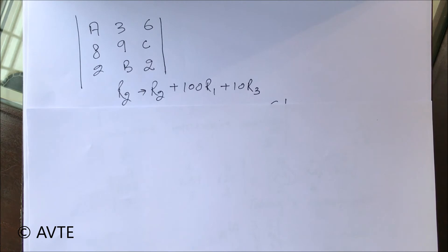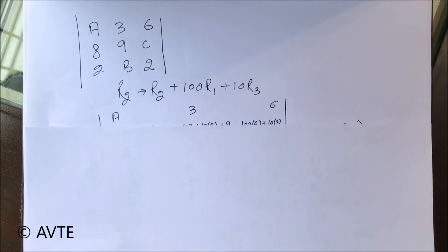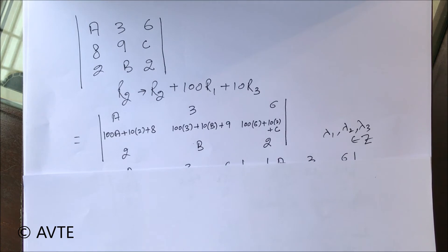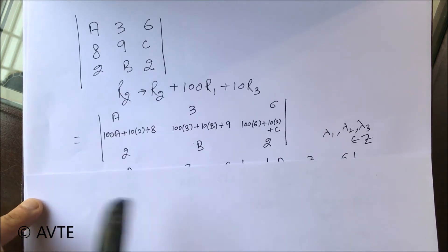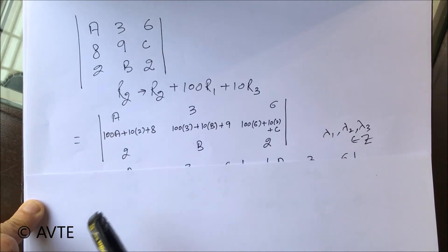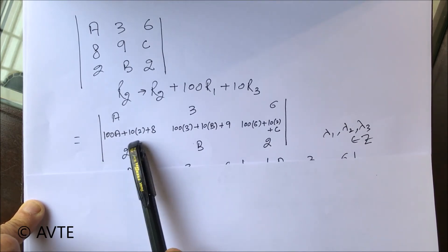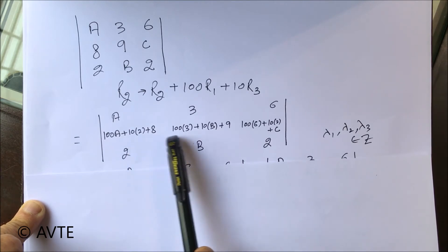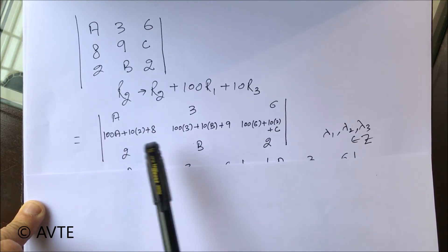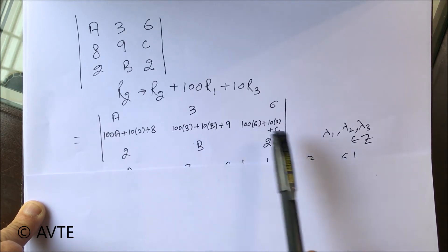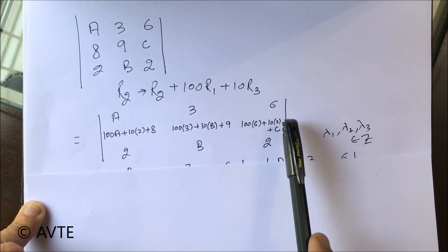We have the determinant and by applying the operation R2 → R2 + 100×R1 + 10×R3, do you see the magic of this operation? The first and third rows remain the same, but the impact is on the second row. We get 100×a + 10×2 + 8, which gives us a128. Similarly, the second entry becomes 300+b9, and the third becomes 602c.